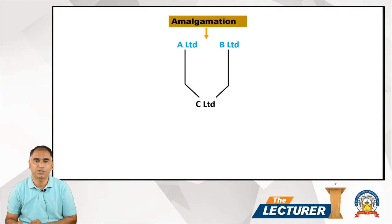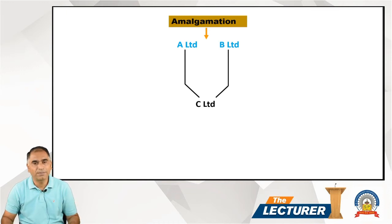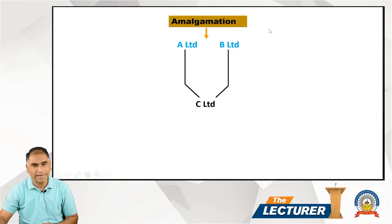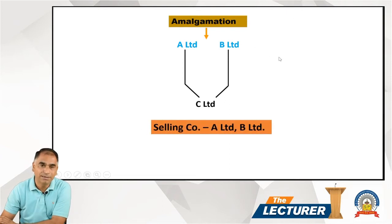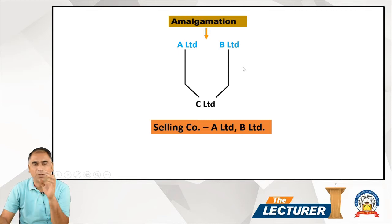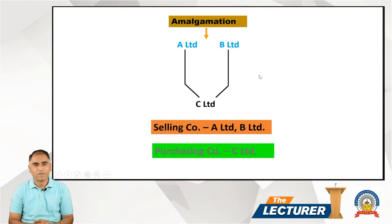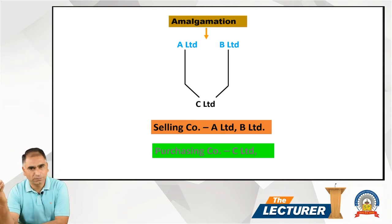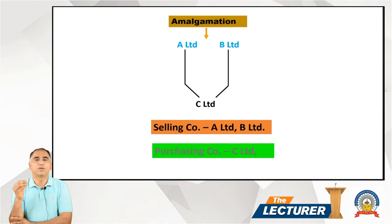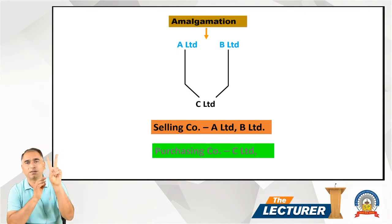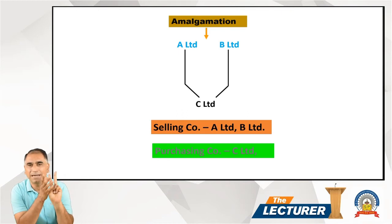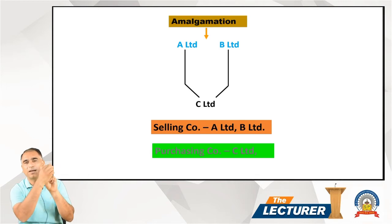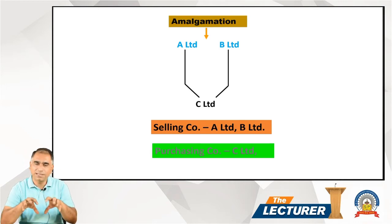In amalgamation, normally there are three parties involved. In our example, A Limited and B Limited are the selling companies - they sell and transfer their business. C Limited, which acquired the business, is the purchasing company. In any question on amalgamation, we are concerned with just two things: accounting treatment in the books of the selling company, and accounting treatment in the books of the purchasing company.